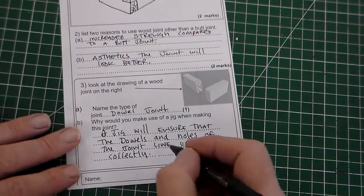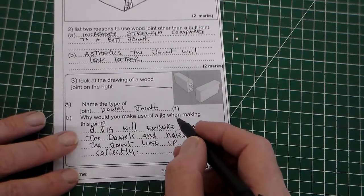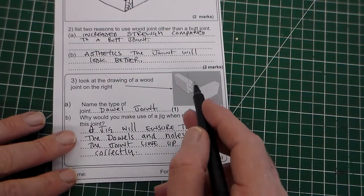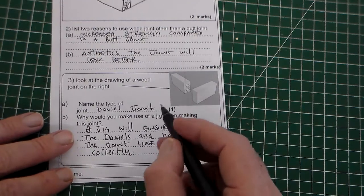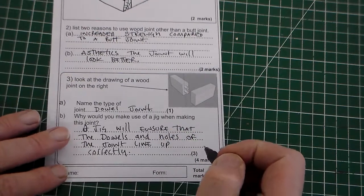I guess you could have said a jig would help by enabling you to do it quicker. Because technically, if you took enough time, you could make them accurate. But it is quickly and accurately.